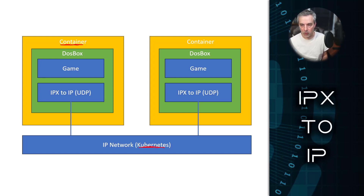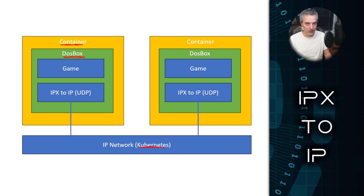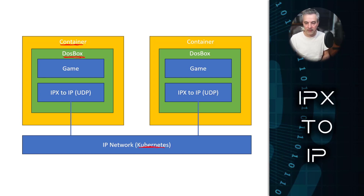DOSBox is the core technology here. DOSBox is an emulation software that allows you to play old DOS-based games. So if it would run in DOS 5 or DOS 4, you can load it up in DOSBox, and then DOSBox provides the emulated hardware that would have been popular during the era of these DOS-based games — things like Sound Blasters, joysticks, mice, and whatever hardware was needed to play those old DOS games.